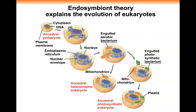Endo means inside. Symbiosis — when two organisms interact with each other, they can cause harm (like a parasite causing disease) or help each other, which is mutualism. Endosymbiosis basically means two organisms interacting with each other inside the cell. Symbiosis is two organisms interacting with each other; endo meaning inside.